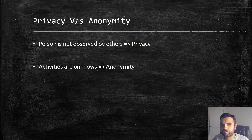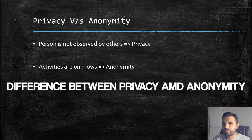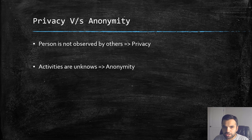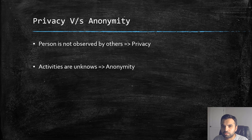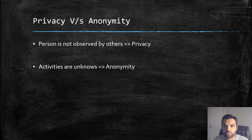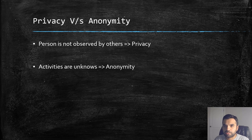First, let me clarify the difference between privacy and anonymity because a lot of people have confusion. Privacy is where a person is not observed by others. For example, if you are in your house and you want privacy from your neighbors, you would put up curtains or blinds on your windows and doors so people outside cannot see what you are doing inside the house. They know that you are in the house, but they don't know what you're doing inside — that's privacy.